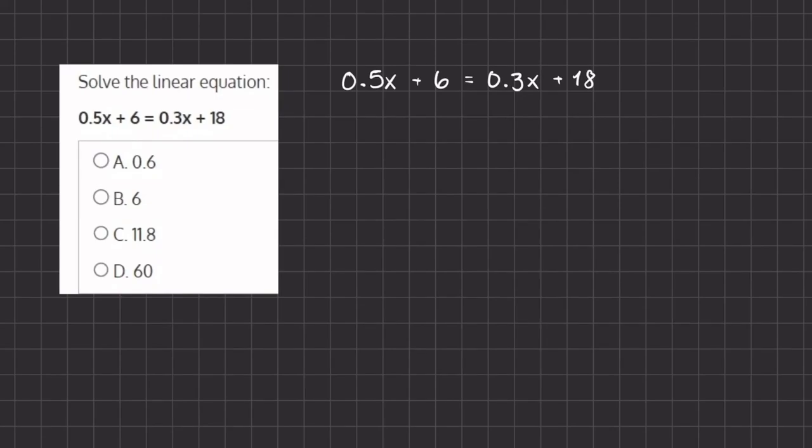Now in order to solve for the value of x, we want to isolate it. We're going to begin by moving all of the numbers with x values to the left hand side and all the numbers with no variables to the right hand side.